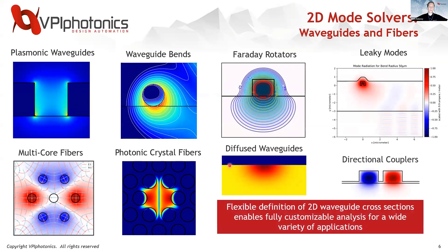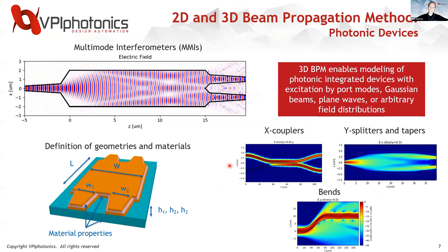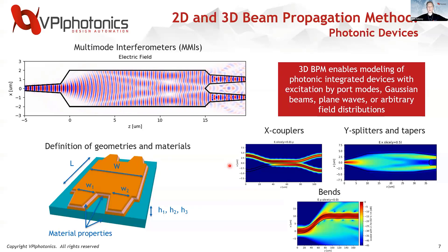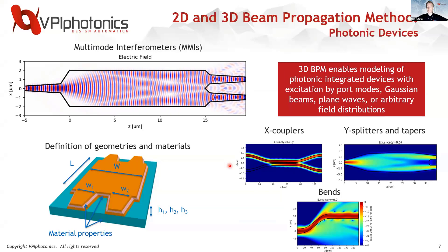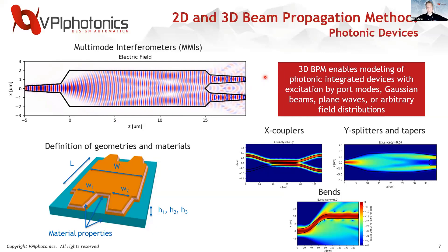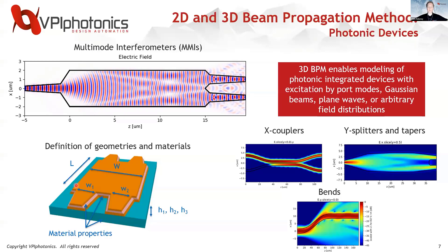Within VPI Device Designer there are a number of finite element 2D mode solvers. Applications include multi-core fibers, waveguide bends, and directional couplers — it's a customizable analysis for a wide range of applications. It also includes 2D and 3D beam propagation method. You can really study something like an MMI — with a certain input, you can understand what the port modes look like at the two outputs, define a wide range of geometries, and use different materials to study transmission.